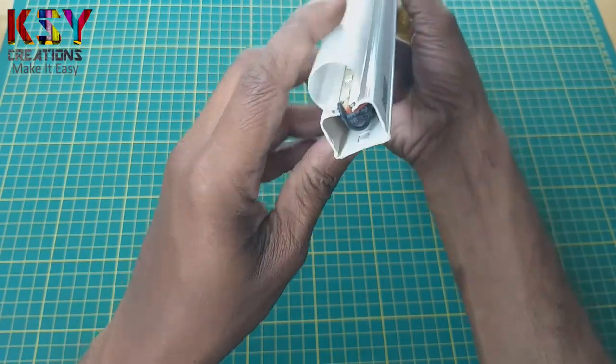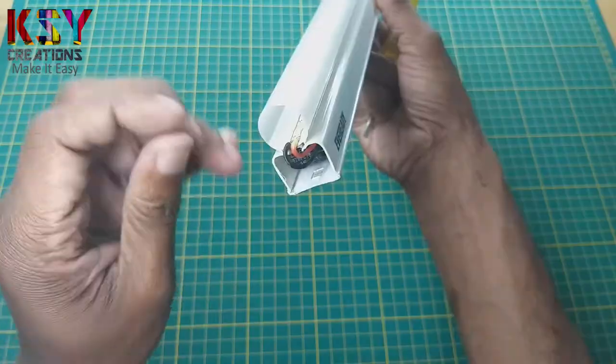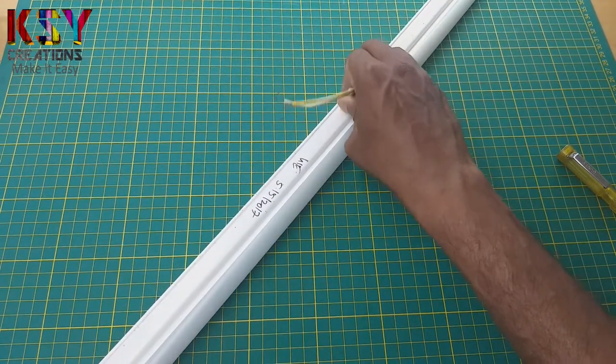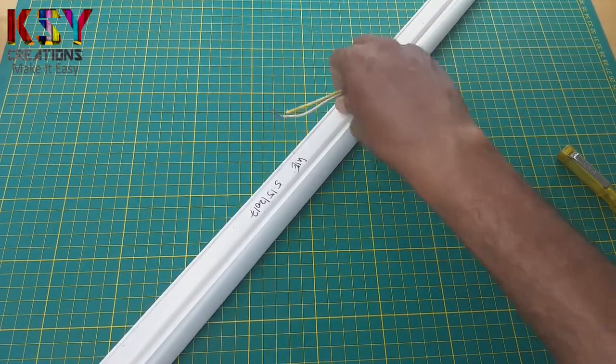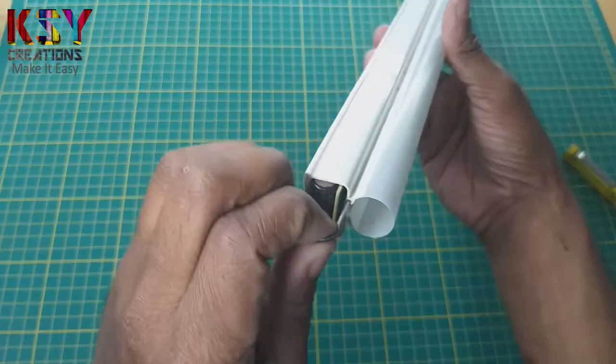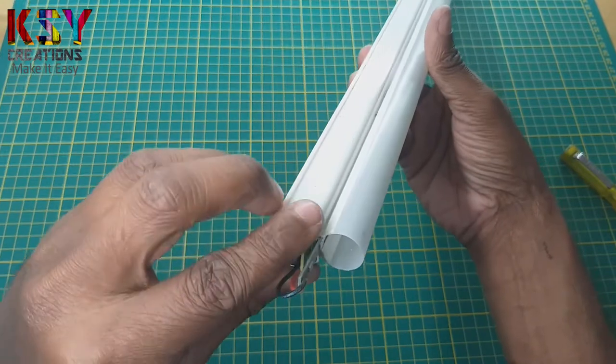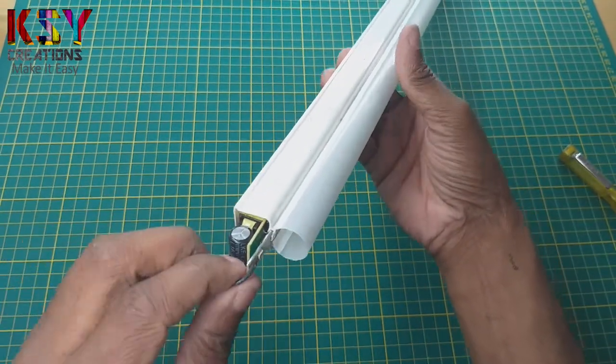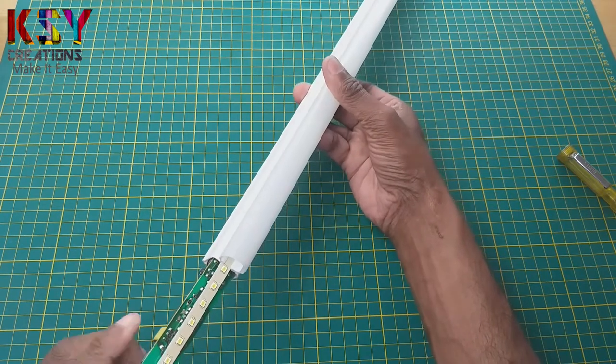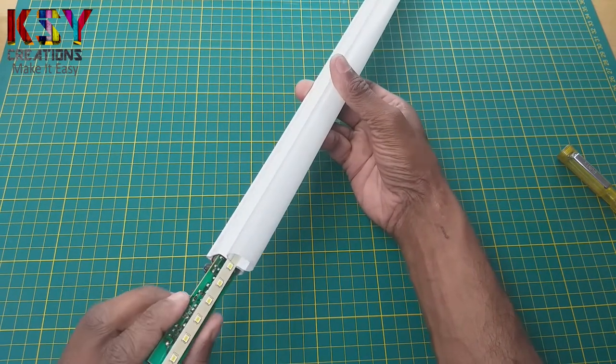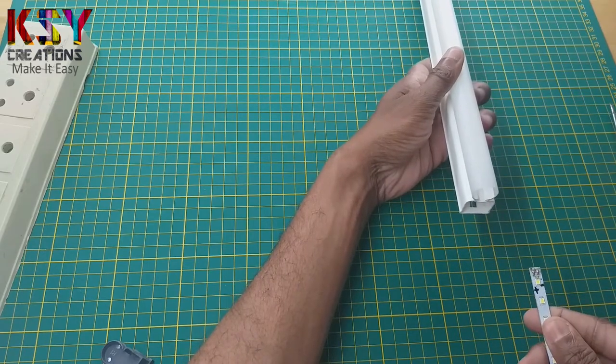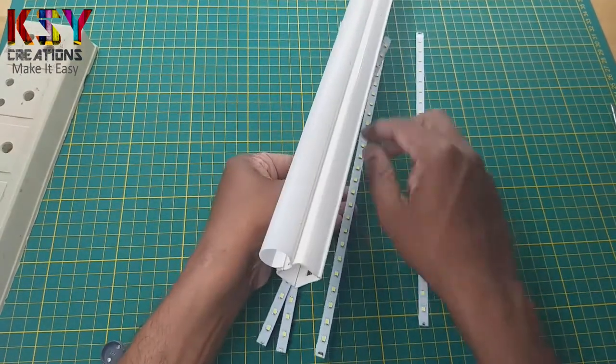If we see inside, there is a LED strip and the circuit. In this way we can remove the circuit and LED strip from this tube light. In this way we can remove LED strip from this. You can see I have removed the LED strip from this.